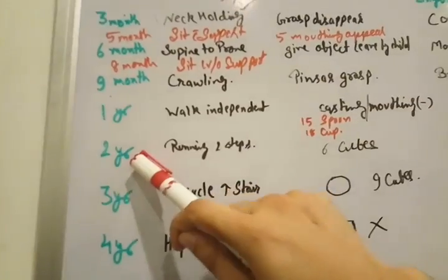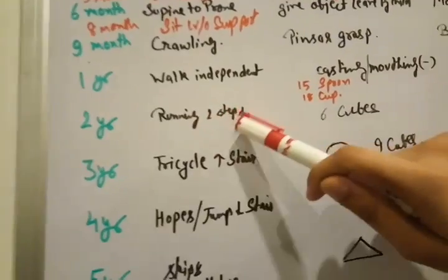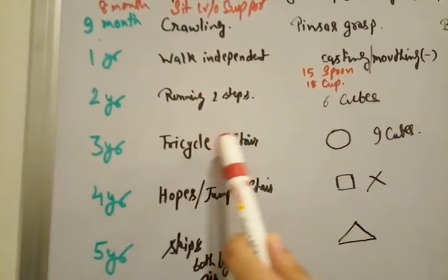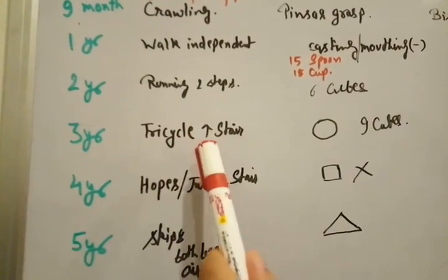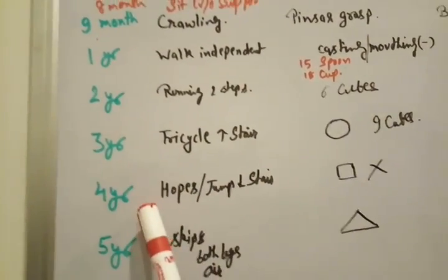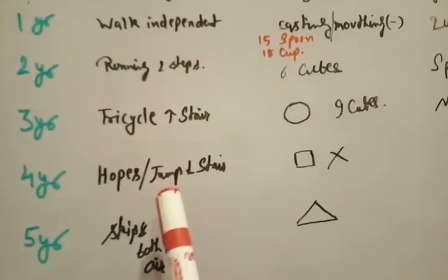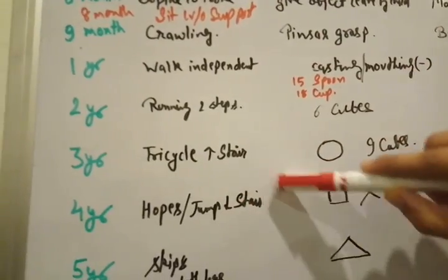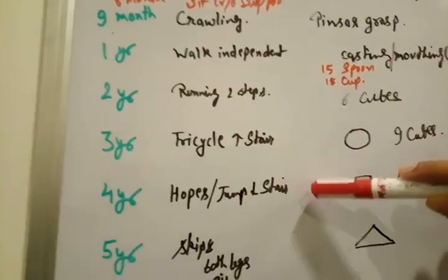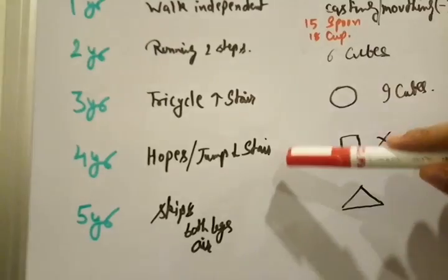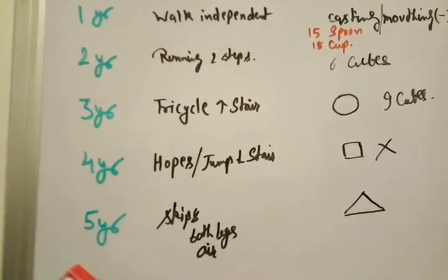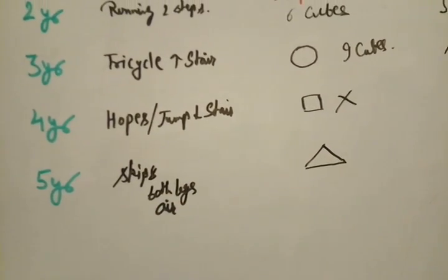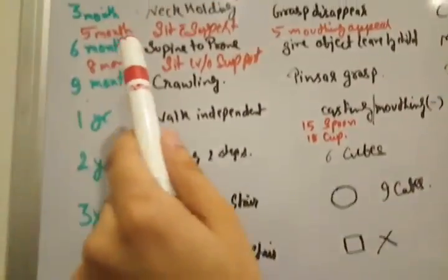Then 2 year, he will be able to run by 2 steps forward, 2 steps backward. And 3 year - how to remember tricycle - he climbed 1 stair up. In 4 years, hops and jumps, a child able to jump and come down stair. And 5 year, he skips, skips means both legs in air.